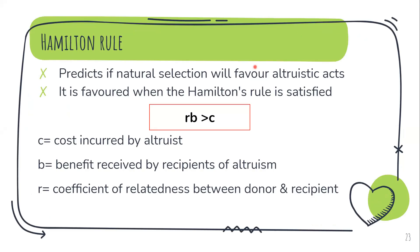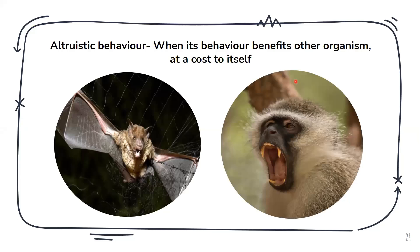Welcome to another video. Today we will be talking about the Hamilton rule. The Hamilton rule helps us judge whether natural selection will favor an altruistic act. To understand this, we need to first understand what altruistic behavior means.